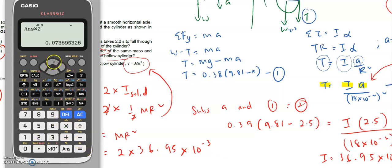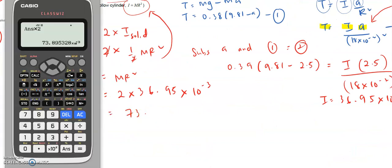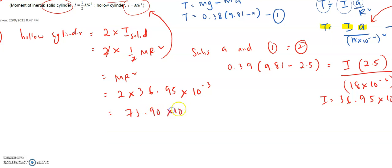I did it: 36.95 power of negative three, so I get the answer times two. My answer becomes 73.90 times 10^-3 kg·m². So that's the answer.